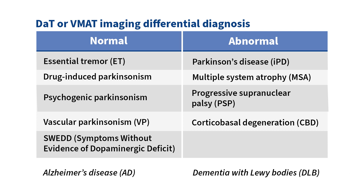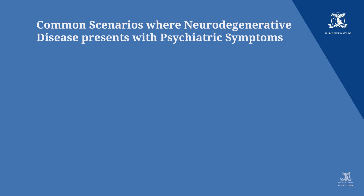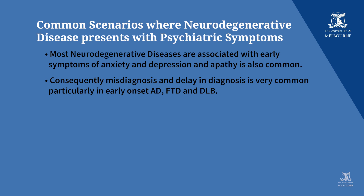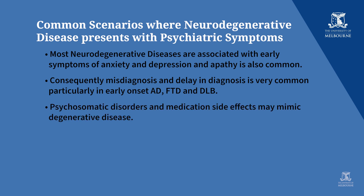I'll finish with a few common scenarios where patients with neurodegenerative disease may present for psychiatric assessment because anxiety, depression, and apathy are very common features early in and throughout the later phases of neurodegenerative diseases. Consequently, misdiagnosis and delay in diagnosis is very common, particularly in early onset Alzheimer's disease — meaning onset before the age of 65 — in patients with frontotemporal dementia, and in dementia with Lewy bodies. Psychosomatic disorders and medication side effects may also mimic neurodegenerative disease, and these investigations may be helpful.